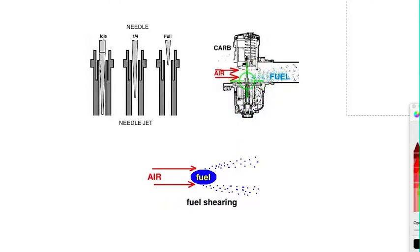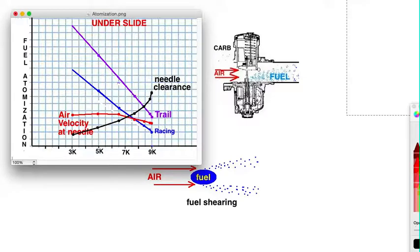At first I thought probably the most important thing is what happens here under the slide. Using my jetting calculator, I was able to calculate the air velocity at different rpm, and that's what this red graph is right here. Air velocity at the needle, and the needle clearance would be this black graph right here.